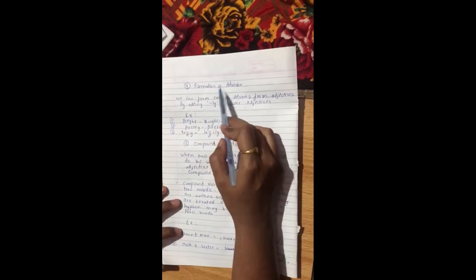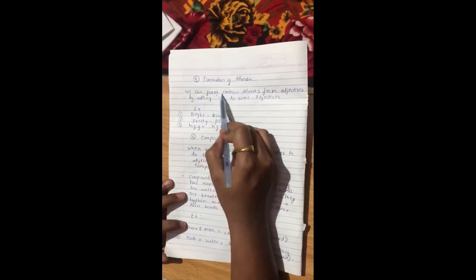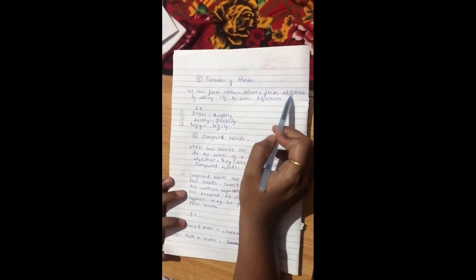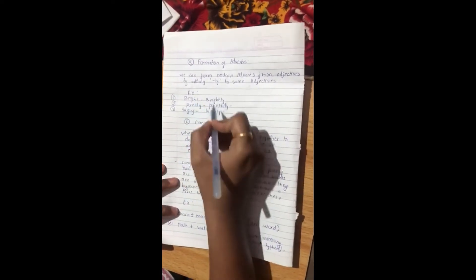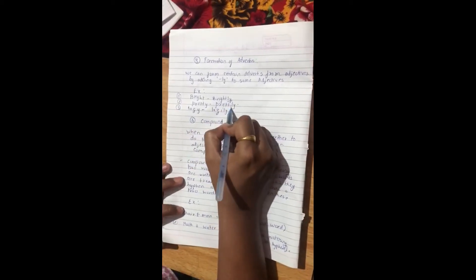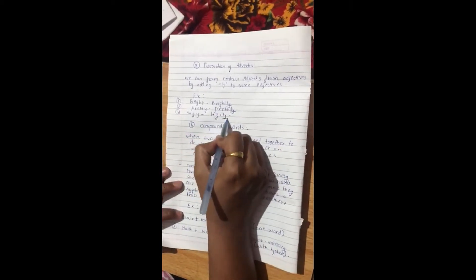Third is formation of adverbs. We can form certain adverbs from adjectives by adding -ly to some adjectives. For example, bright, brightly; pretty, prettily; lazy, lazily.